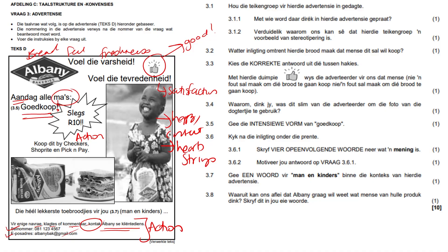Alright, let's take a look at the questions. Hoe is die teikengroep vir die advertensie in gedagte? So while you answer this question, keep the target market in mind. What do you think the target market is here? Who did they grab attention from? From moms, right? So therefore our target market is moms, or grandmothers, or even people that just pack lunches.